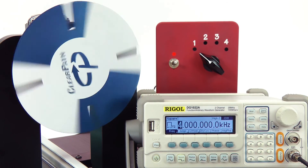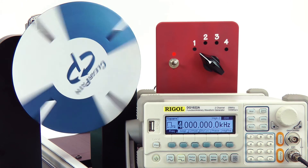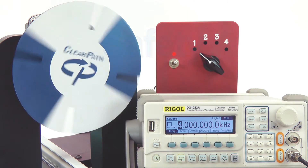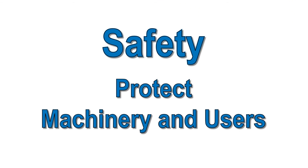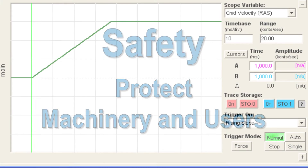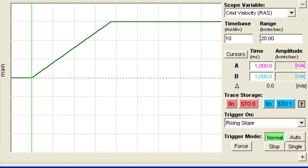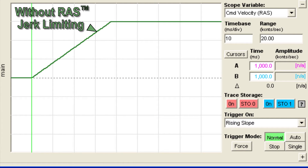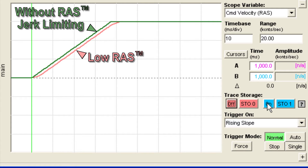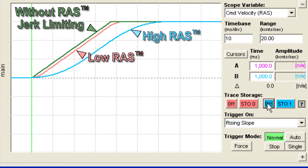The acceleration and deceleration limits can also be used for safety or to protect your mechanical systems from being overdriven. The RAS jerk-limiting feature can automatically smooth the transitions between different speeds so that you don't have to worry about writing complex software to do this.